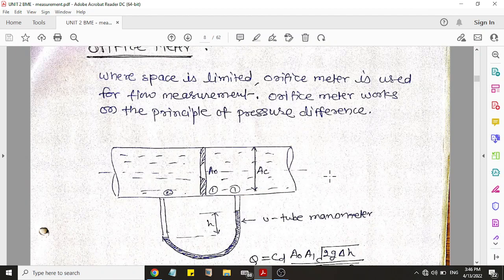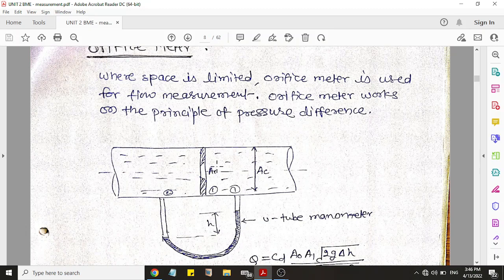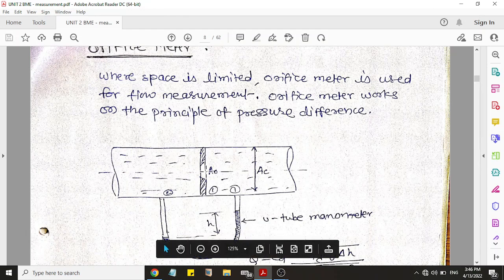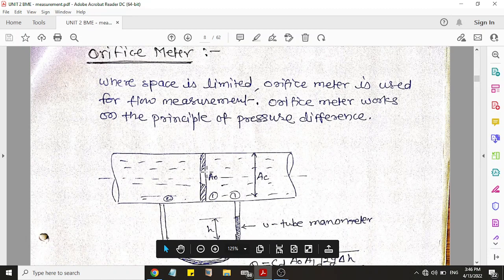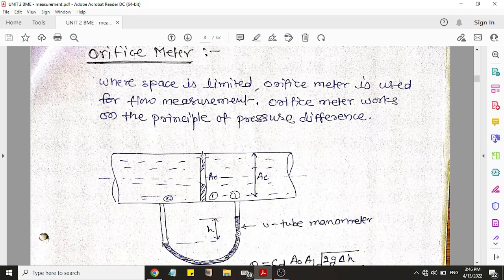Second method is orifice meter. Orifice meter is basically used where we don't have much space, where space is limited and venturimeter cannot be used. Orifice meter is basically a circular plate with a hole inside.